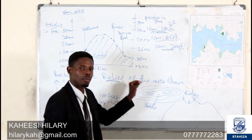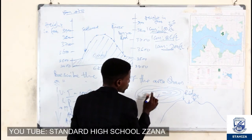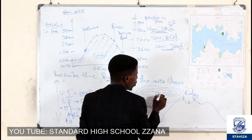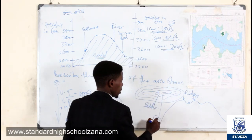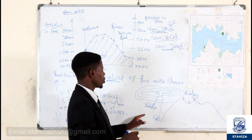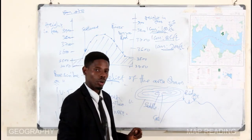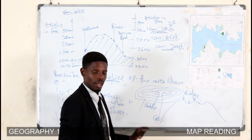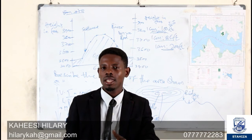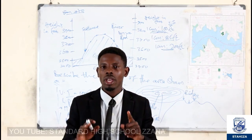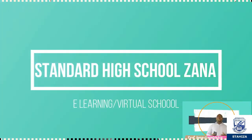When the space between two hills is small, we say there is a col. The saddle can also be called a U-shaped valley, while the col can be called a V-shaped valley. Thank you for watching, and let us meet in the next episode where we are going to talk about more map reading.